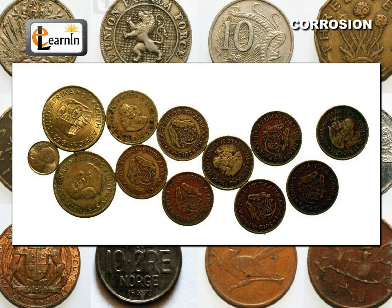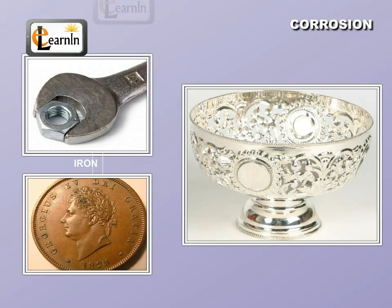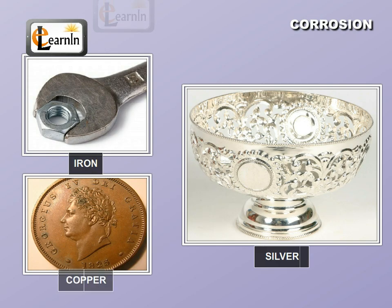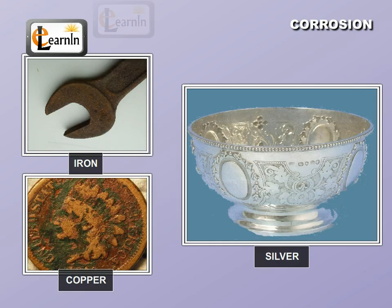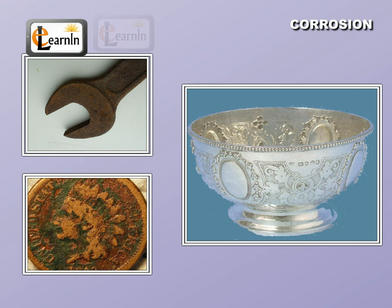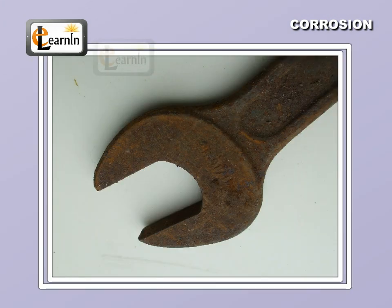Corrosion. Have you ever wondered why the colors of some metals like iron, silver, and copper gradually change with time? This is caused due to corrosion. When these metals are exposed to air and moisture, they get corroded.